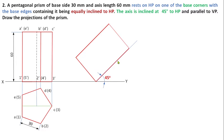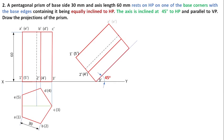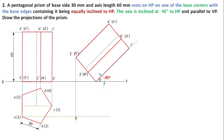Complete this front view as it is from step 2 and mark the same notations 1 dash, 5 dash, 2 dash, 4 dash, 3 dash. For this, measure the distance from 1 dash to 2 dash and redraw the same on the step 3 front view inclined at 45 degrees to HP. Now we will move to the final step — extend the projectors from this front view as well as from the top view. All respective corners will meet at one point.